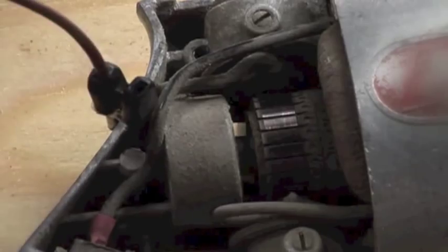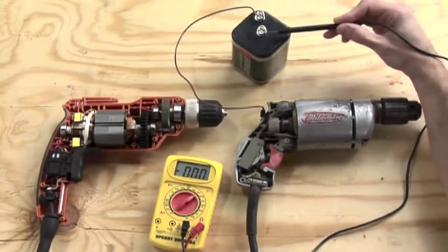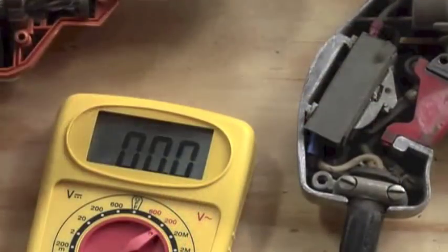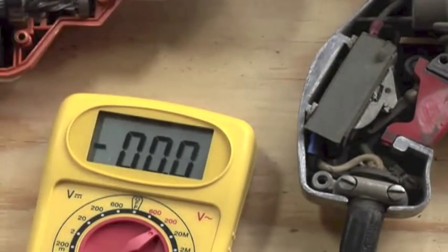Don't assume that an item is double insulated unless it's labeled as such. Older electronics and tools often were neither grounded nor double insulated and you can get quite a shock from them.